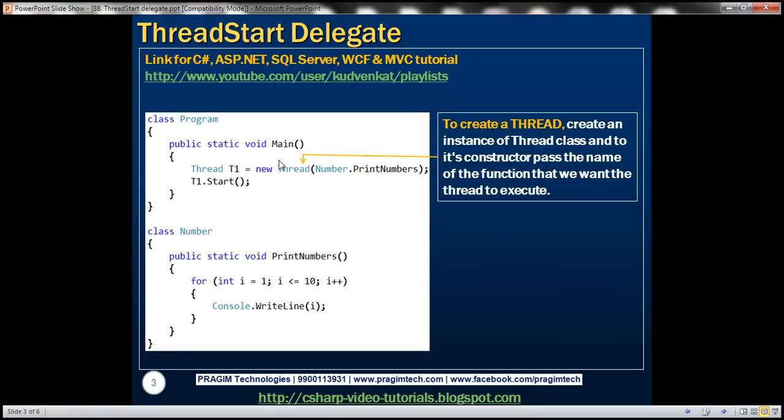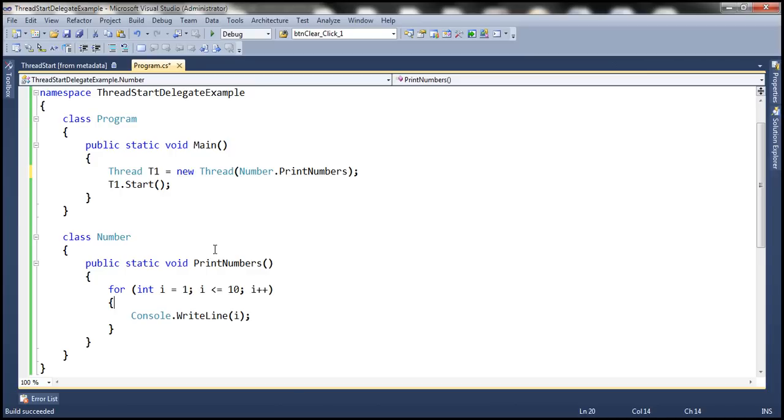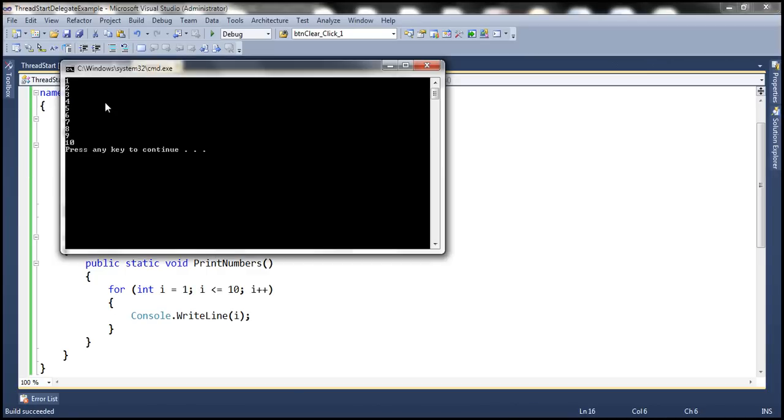Within the main method, we are creating an instance of the Thread class and to its constructor, we are passing the name of the function that we want this thread to execute. Since PrintNumbers is a static function, we are invoking it on the name of the class. I have this exact same code already typed within Visual Studio. Let's go ahead and run this and notice the output is what we expect, numbers from 1 to 10.